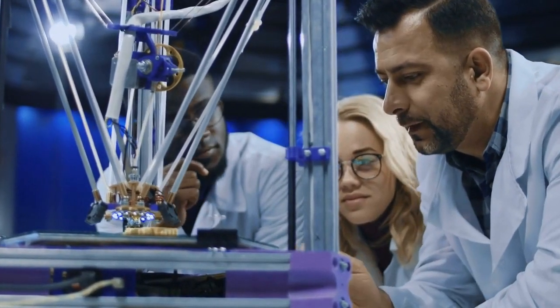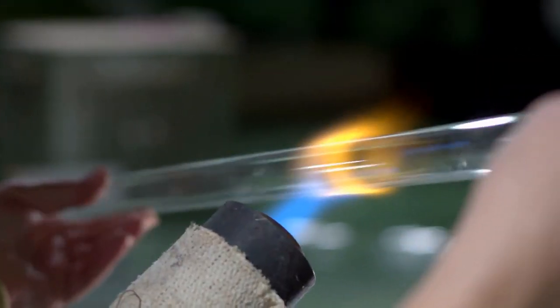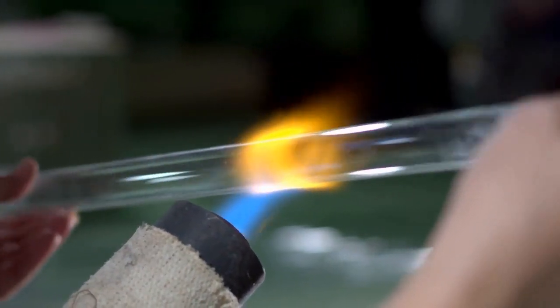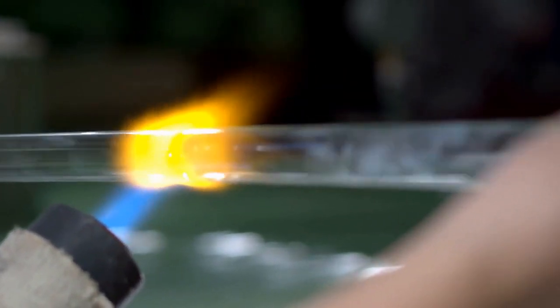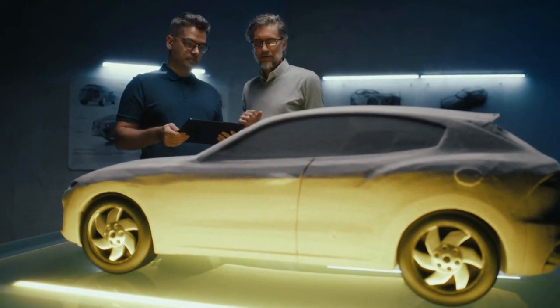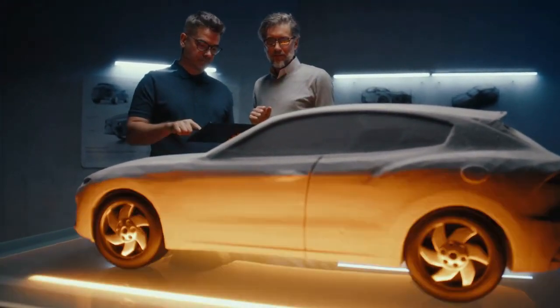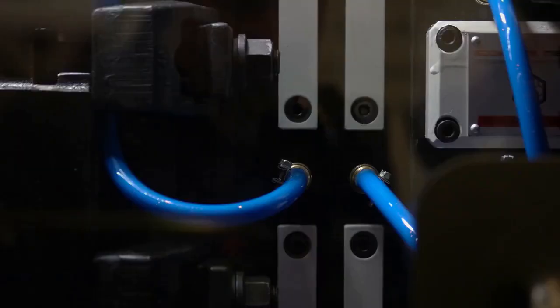With the materials selected, the manufacturing process begins. The components of the calculators, such as the buttons and display screens, are created using advanced manufacturing techniques. Casio uses a combination of automation and skilled craftsmanship to produce each component to exacting specifications.